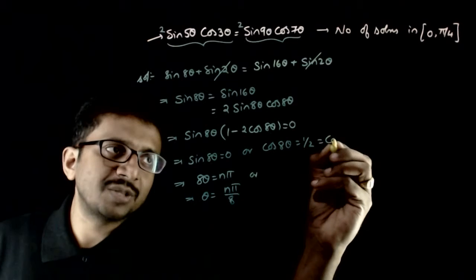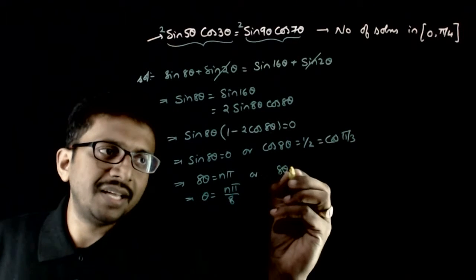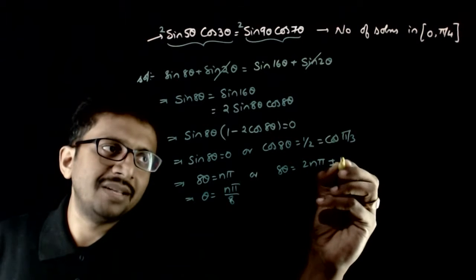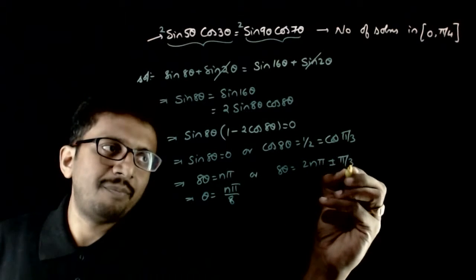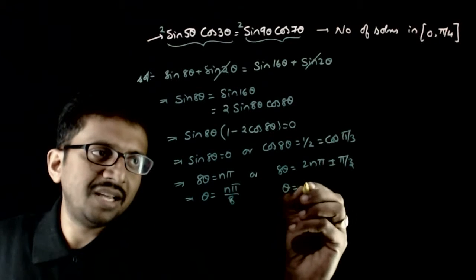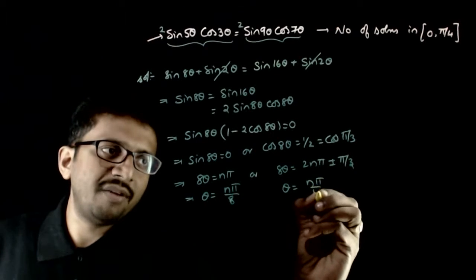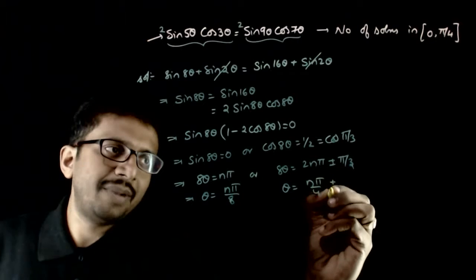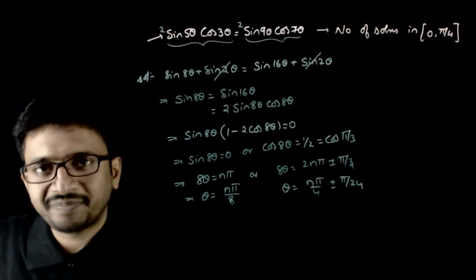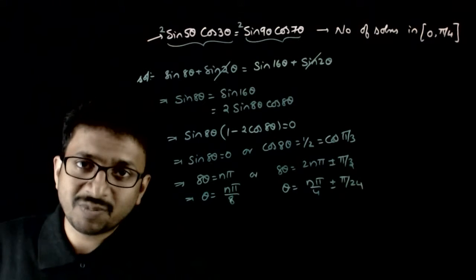For cos8θ = 1/2, since 1/2 corresponds to cos(π/3), we have 8θ = 2nπ ± π/3. Dividing by 8, θ = nπ/4 ± π/24.